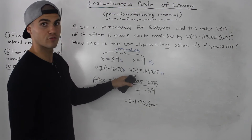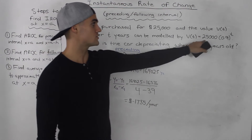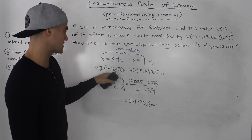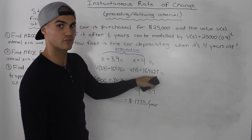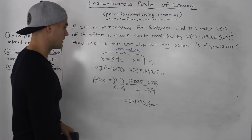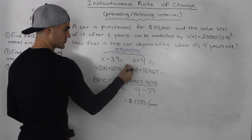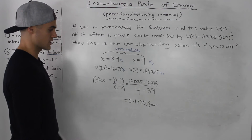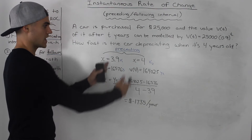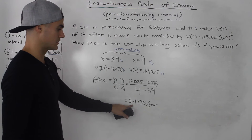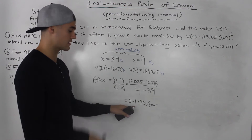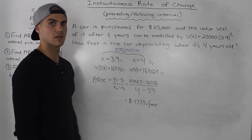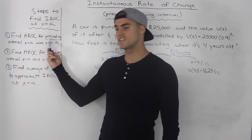To find the average rate of change in this interval, we first have to find what the value of the car is at 3.9 years and at 4 years. We take 3.9 and 4 and plug them into our equation, and we get approximately $16,576 and $16,402.50. Then using the slope formula — y2 minus y1 over x2 minus x1 — we get an average rate of change in that interval of approximately negative $1,735 per year.